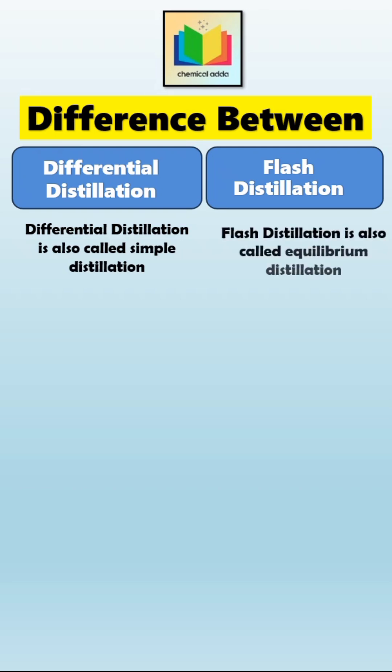Flash distillation is also called equilibrium distillation, because in the single step process, the liquid and vapor formed and instantly reach vapor-liquid equilibrium at the same condition. Now let's see the difference between these two processes of distillation.